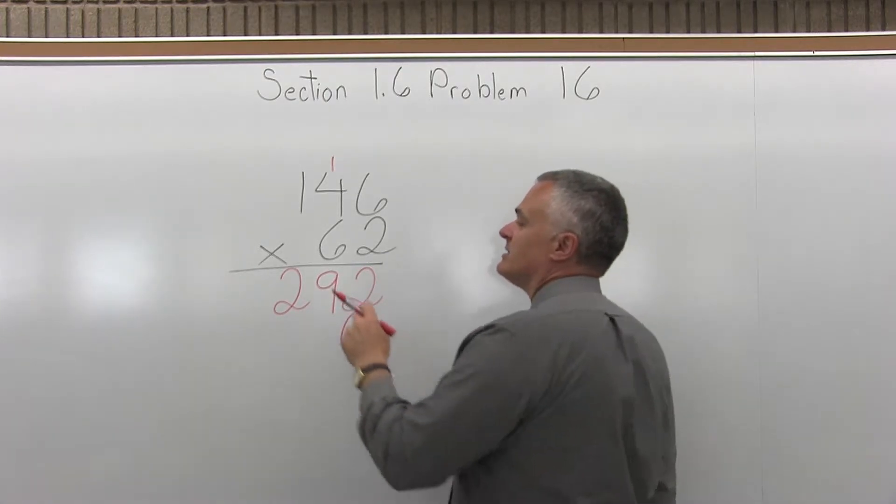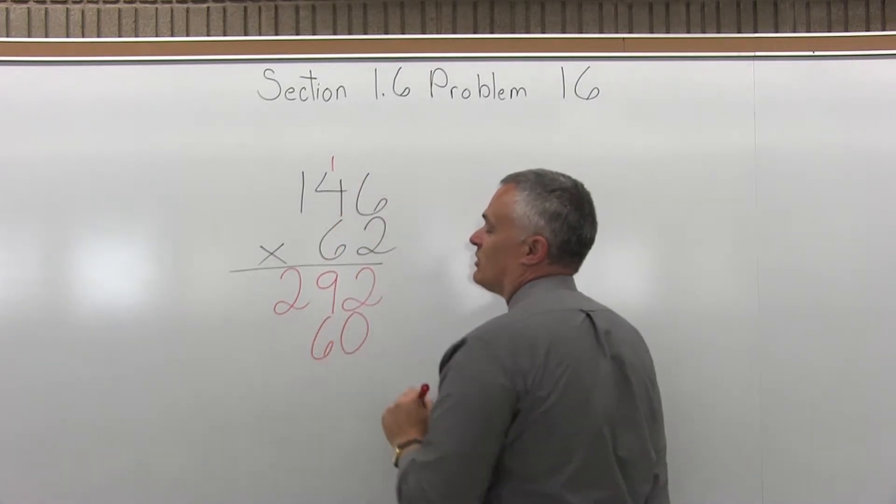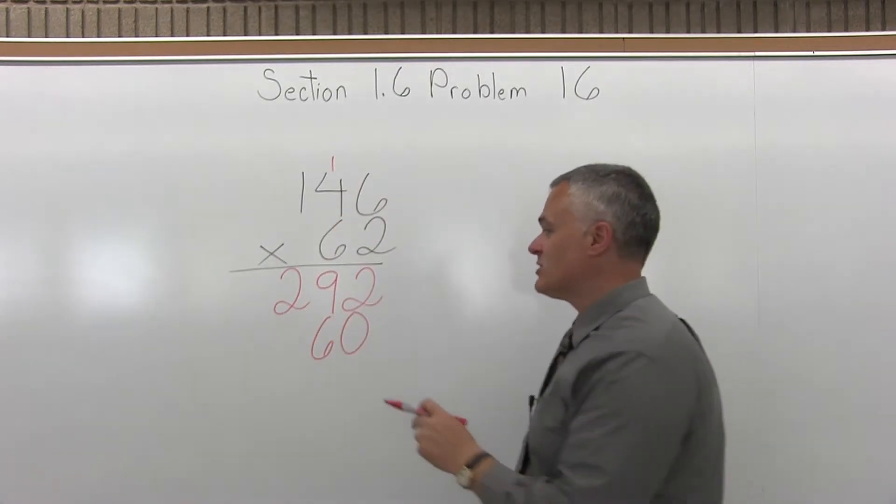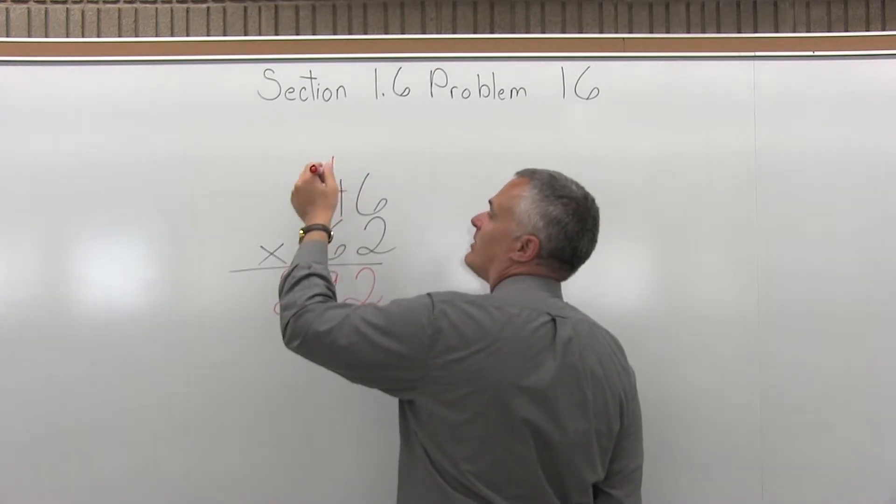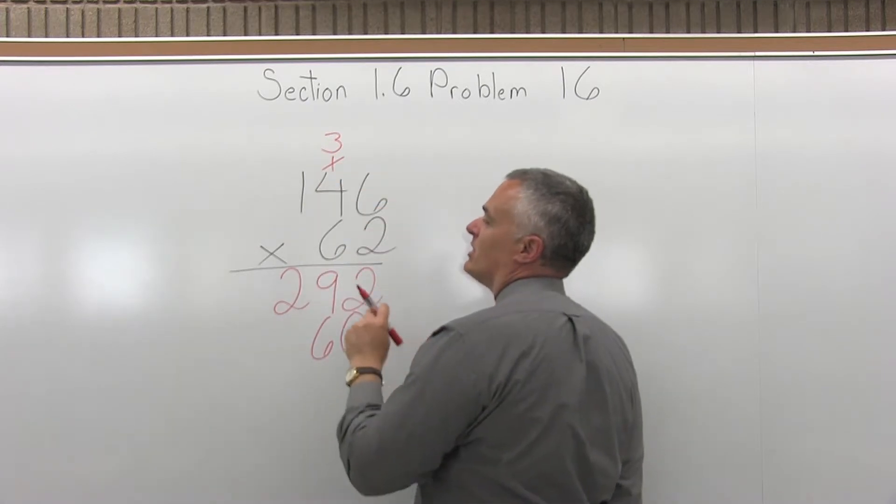Now I can start multiplying 6 times 6 is 36. So put the 6 from the 36 in the position where we're working. Carry the 3 to the top of the next column. So I'll cross off the one that I carried before and put a 3 above that.